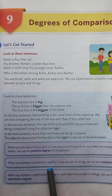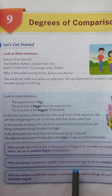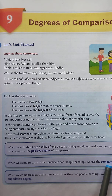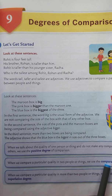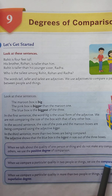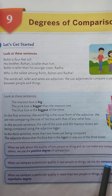When we compare a particular quality in two people or things, we use the comparative degree. We use the comparative degree of an adjective when we are comparing two persons or two things. Example: Mr. Singh is richer than Mr. Mehta — here I am comparing two people, Mr. Mehta and Mr. Singh. Second example: Kolkata is bigger than Asansol — here I am comparing two cities, Asansol and Kolkata.